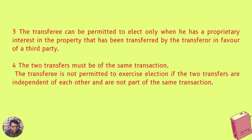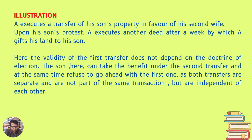Third, the transferee can be permitted to elect only when he has a proprietary interest in the property that has been transferred by the transferor in favour of a third party. Fourth, the two transfers must be of the same transaction. The transferee is not permitted to exercise election if the two transfers are independent of each other and are not part of the same transaction.